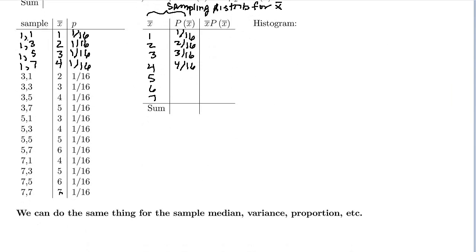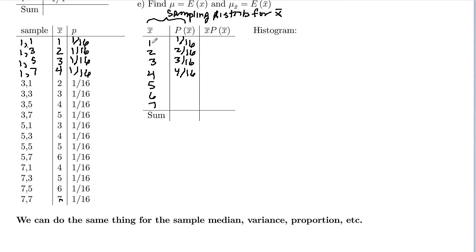We had counted how many had a mean of one, how many of our 16 possible samples. And there were one out of 16. Two out of 16 had a mean of two. Three out of 16 had a mean of three. Four out of 16 had a mean of four.